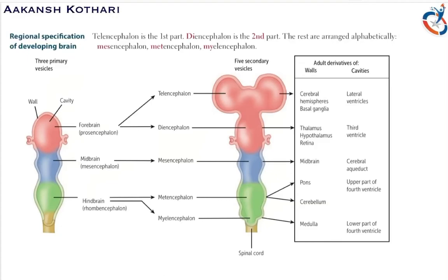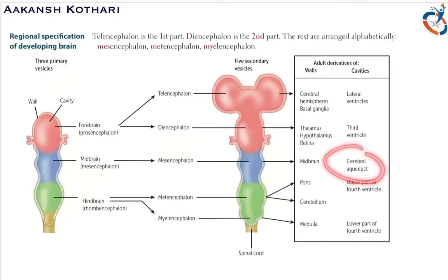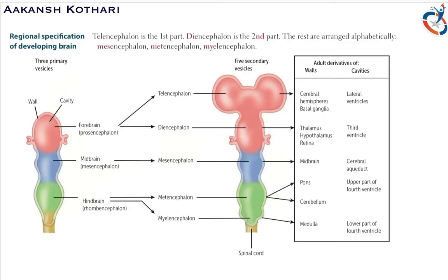The mesencephalon forms the midbrain; its wall forms the midbrain, whereas its cavity forms the cerebral aqueduct, which is the connection between the third ventricle and the fourth ventricle. The hindbrain, or rhombencephalon, forms two parts: the metencephalon and myelencephalon. The metencephalon forms the pons and cerebellum, whereas the myelencephalon forms the medulla.